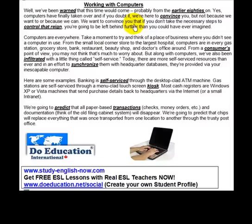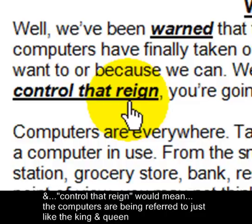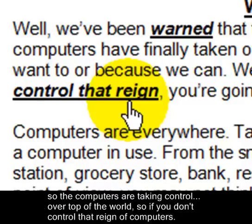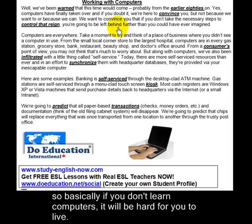We want to convince you that if you don't take the necessary steps to control the reign, you're going to be left behind further than you could have ever imagined. 'Control the reign' — 'reign' means like a king or queen would have a reign over a country or a colony. The computers are being referred to just like the king and queen, taking control over the world. So if you don't control that reign of computers, you will be left behind. Basically, if you don't learn computers, it'll be hard for you to live.